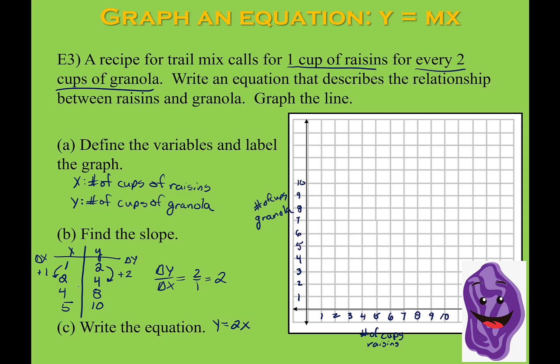Now we want to graph it. At 0 cups of raisins I have 0 cups of granola, so I start at the origin, then plot points: (1, 2), (4, 8), and (5, 10). Drawing the line through those points, I can use the slope to verify — starting at (1, 2) and going up 2 over 1 repeatedly, all those dots match up on the line I originally drew.